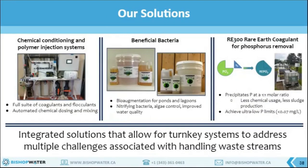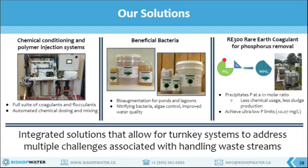We also offer a range of products that can help augment treatment or be integrated with our other solutions to allow for a turnkey or plug-and-play system that addresses more than one challenge at a time. For example, our chemical conditioning and polymer injection system is used in conjunction with our solids management solution to flocculate and help separate solids from a liquid stream. We also have beneficial bacteria that can be used for bioaugmentation — essential blends of different types of wastewater-treating bacteria that can be added to a system to help inoculate it or give it a boost if you are struggling to maintain the population of a certain type of bacteria. Lastly, we offer a rare earth coagulant for phosphorus removal called RE300, which is essentially a more effective, more versatile, and less hazardous alternative to chemical coagulants such as alum or ferric, used to precipitate out phosphorus to achieve stringent phosphorus limits.